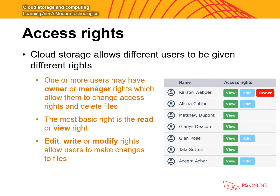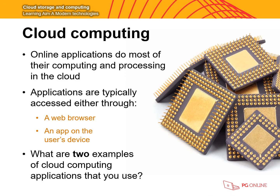We can also use software tools to protect files. One method is access rights. Cloud storage allows different users to be given different access rights, similar to your school system where logging in gives you access to the student share, staff share, or your own documents. Access rights can be set to individual files — for example, a PowerPoint on the student share may be read-only, while a worksheet may have edit access rights so you can type in and submit responses. Similarly in cloud storage, a user like Alicia can view and edit files, while the owner Carson can view, edit, and delete files.